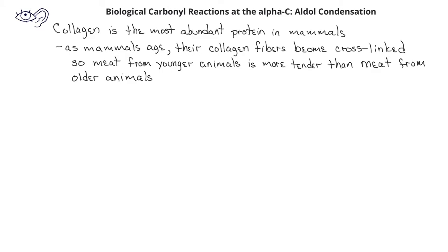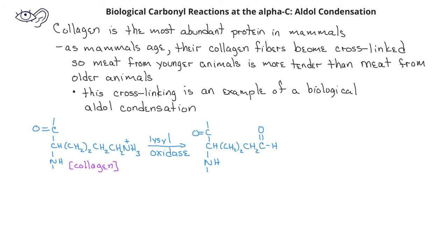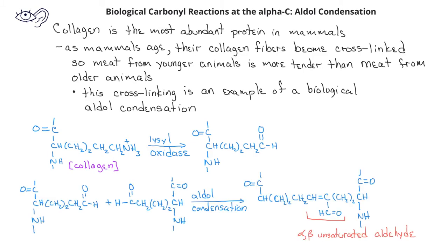Collagen cross-linking is an example of an aldol condensation. Before collagen molecules can cross-link, the ammonium groups must be converted to aldehyde groups by the enzyme lysyl oxidase. An aldol condensation can then take place between the two aldehyde groups producing the cross-linked collagen protein and the alpha-beta unsaturated aldehyde that we expect from an aldol condensation.